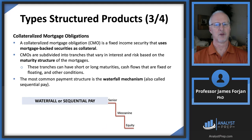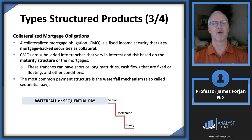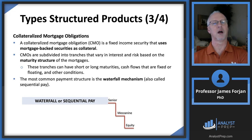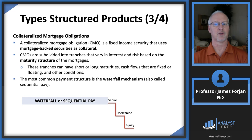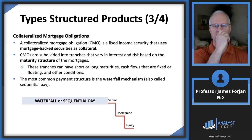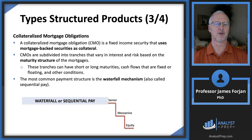Collateralized mortgage obligations (CMOs) are mortgage-backed securities that use the underlying mortgages as collateral. The payment of interest and principal to the owner of a CMO depends on which slice or tranche they originally purchase. These tranches can have short or long maturities, fixed or floating cash flows, or almost any other innovation that financial institutions can devise.